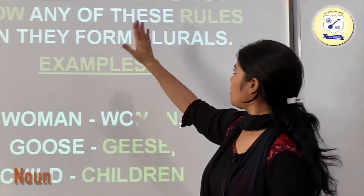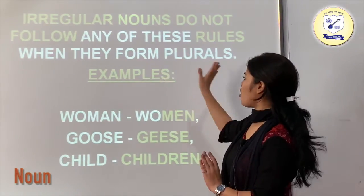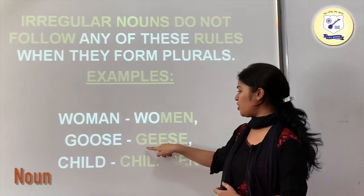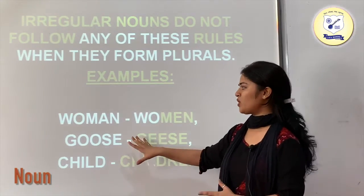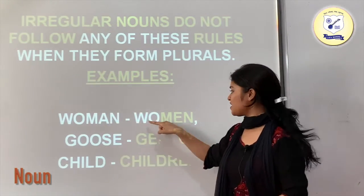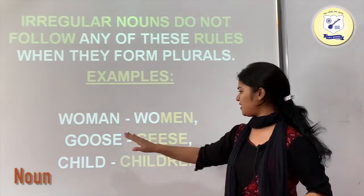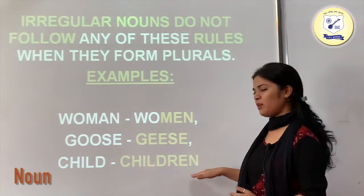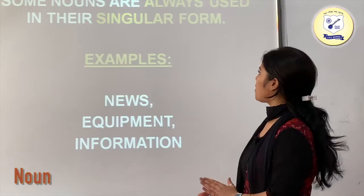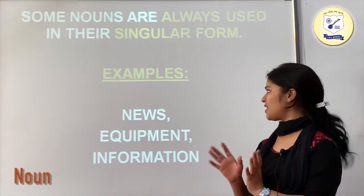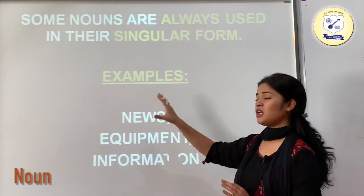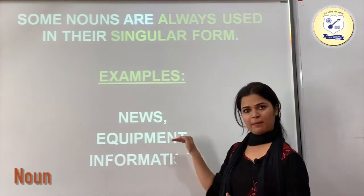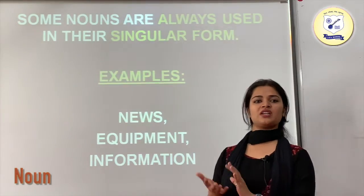Now we have irregular nouns. Irregular nouns do not follow the standard rules when forming plurals. For example: woman becomes women, goose becomes geese, child becomes children. Some nouns are always used in their singular form — you cannot add s or es to them. For example: news, equipment, and information are always in their singular form.